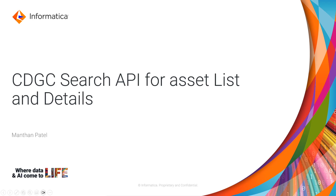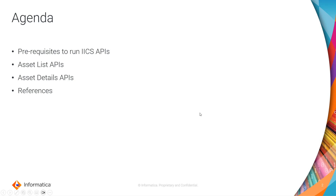Let's move to the next slide. Following are the agendas for today's session. First, we'll discuss the prerequisites required to run any ICS APIs in Postman. Then we'll look at the list of APIs we can use to get the asset list — basically the same search query used in the Data Governance and Catalog UI. We'll also check the asset details API, and at the end I'll attach all knowledge base articles and documentation in the references section.